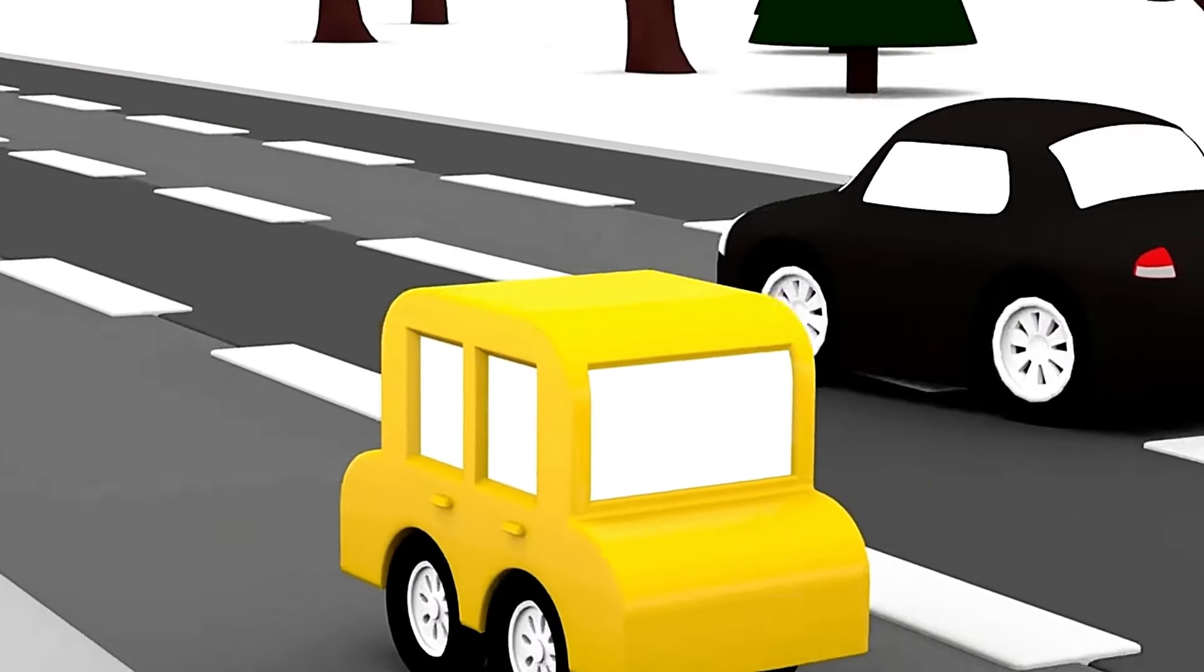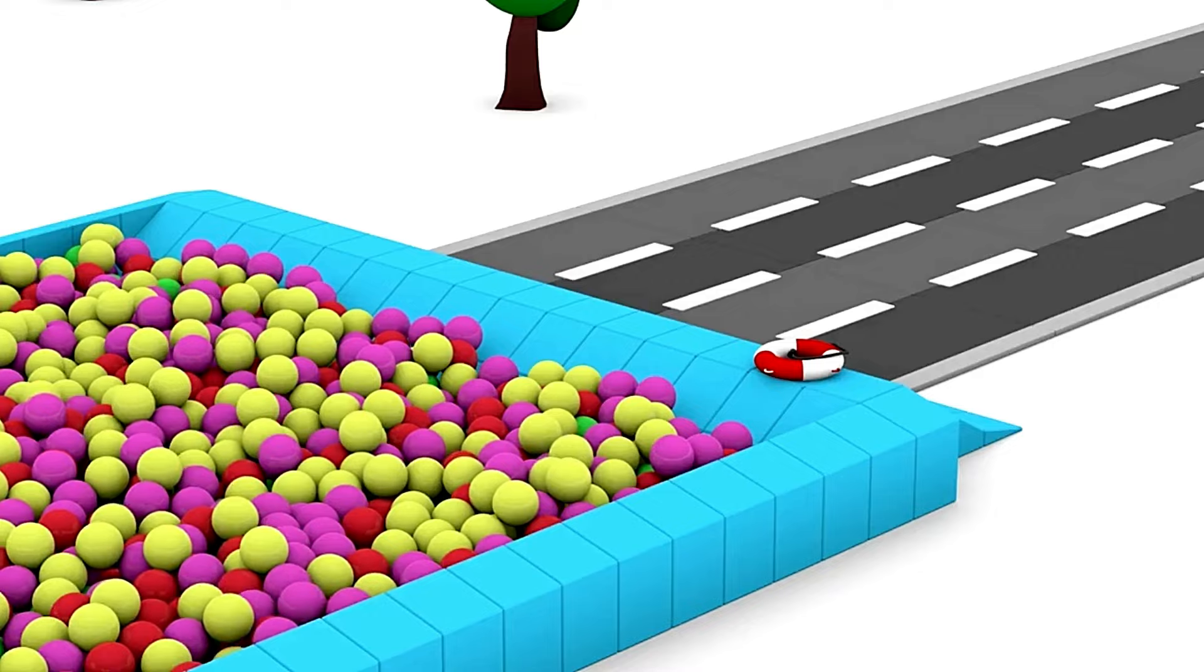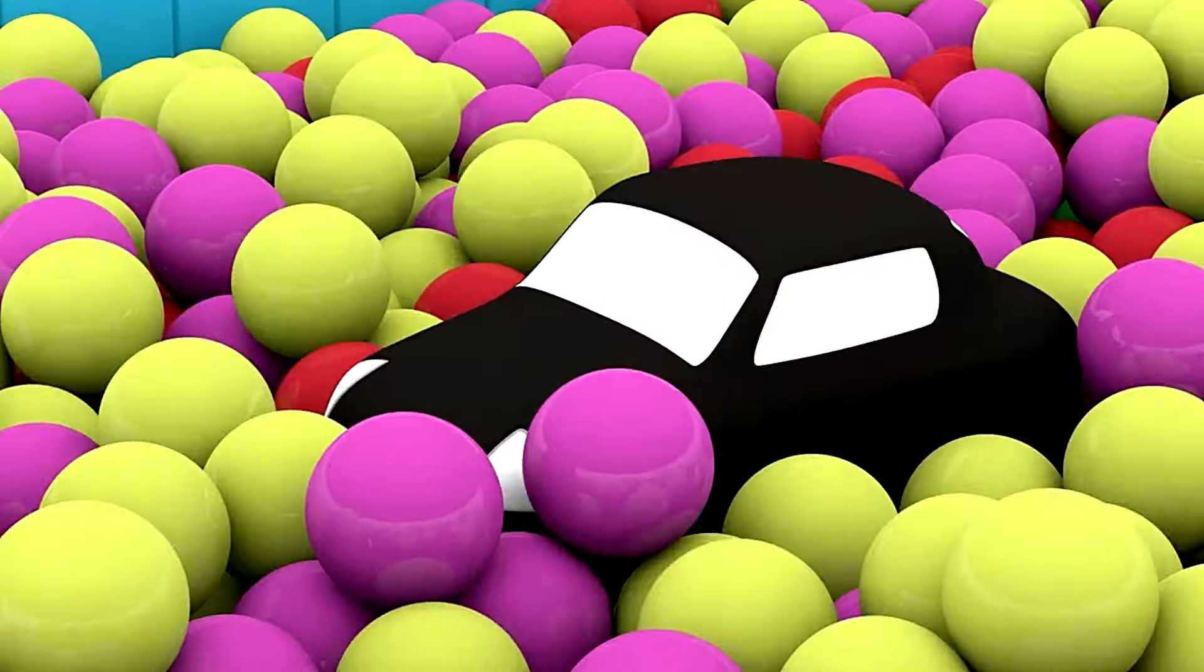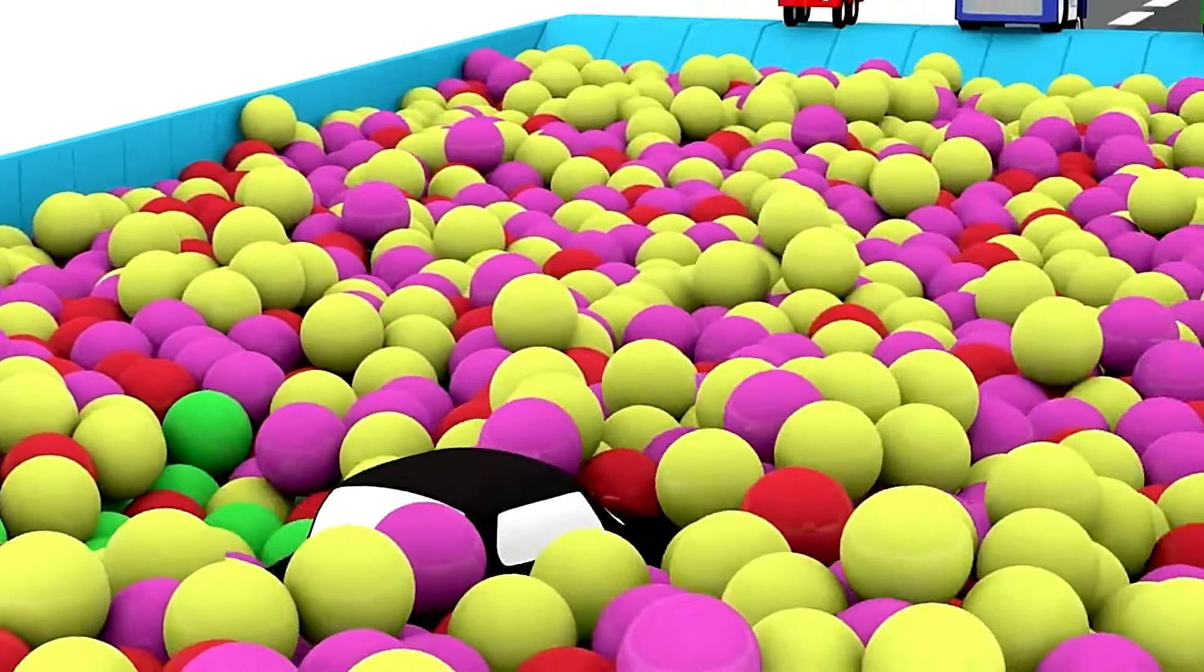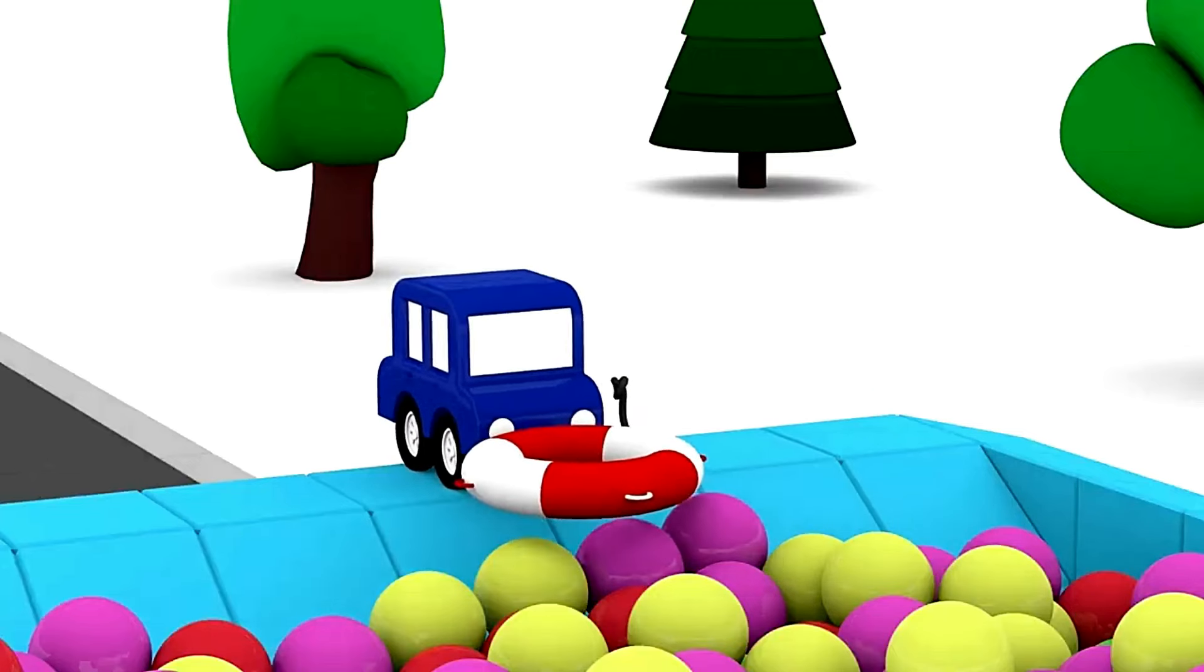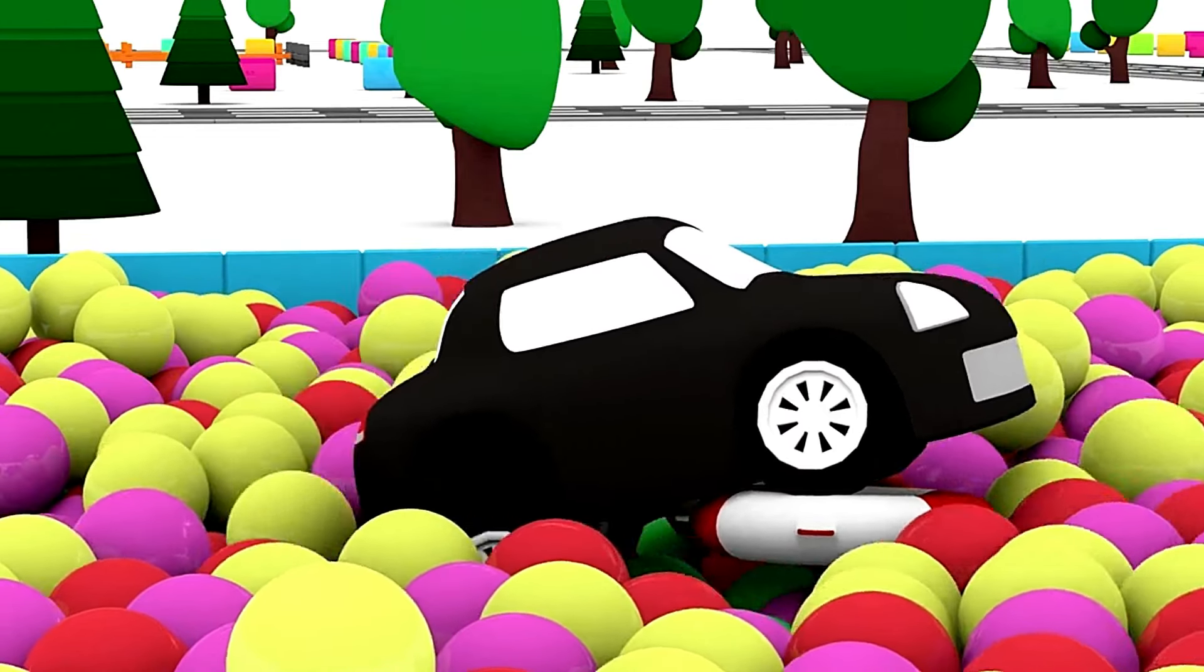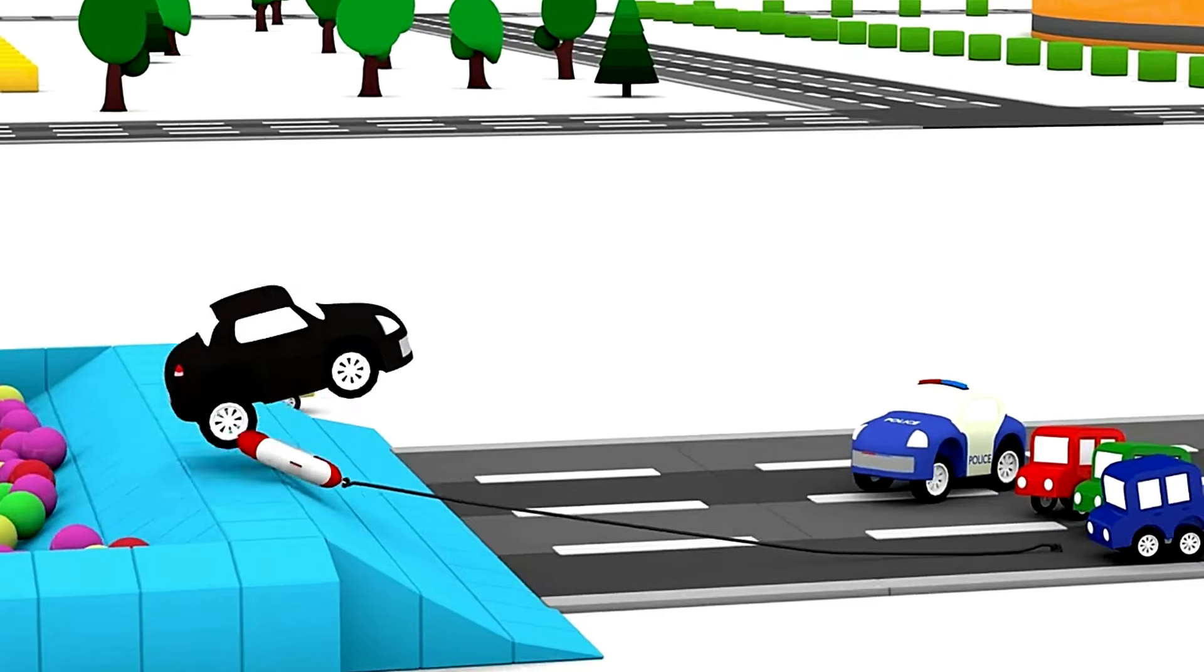The yellow car almost caught up with the hooligan. He dived into the ball pit. He looks like he's drowning. Drowning? Do we save him? We must. The blue car throws a lifesaver to the black car.